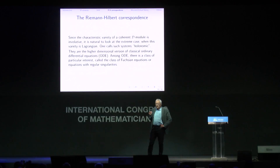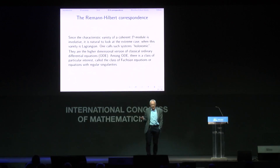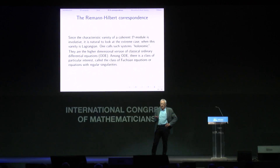The important implication of the involutivity theorem is that in the cotangent bundle, which is a symplectic manifold, one has three kinds of important sub-manifolds: isotropic, coisotropic, and those which are both — the Lagrangian variety. It is natural to look at D-modules whose characteristic variety is Lagrangian; these are called holonomic D-modules. They are the higher-dimensional version of classical ordinary differential equations.